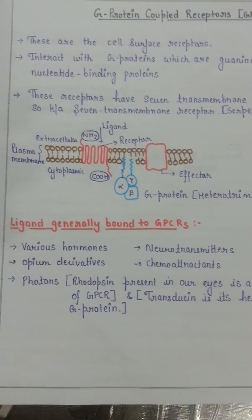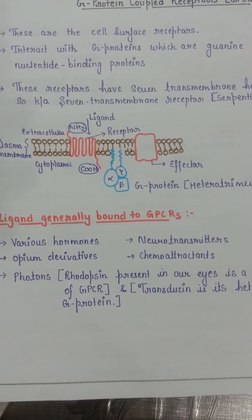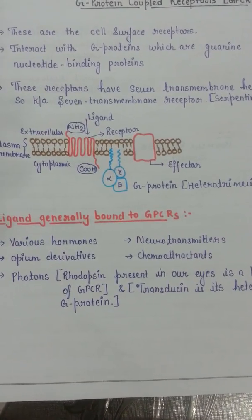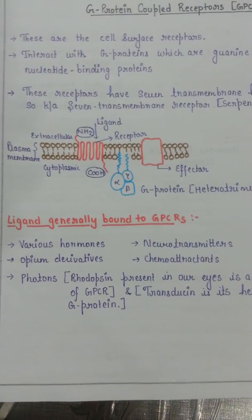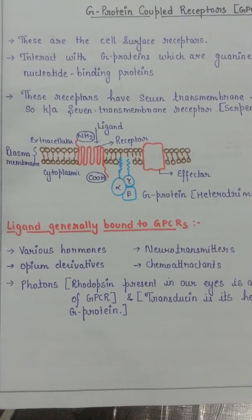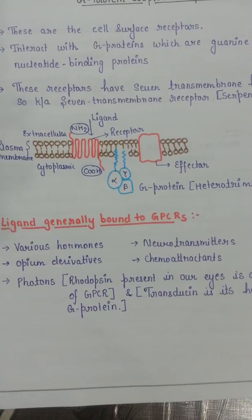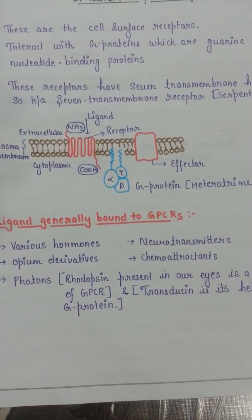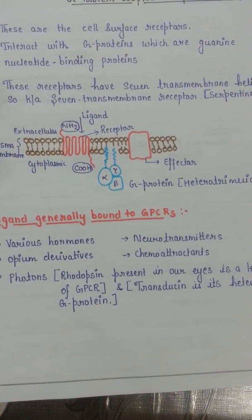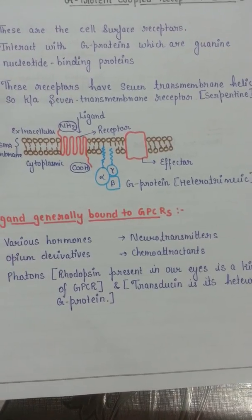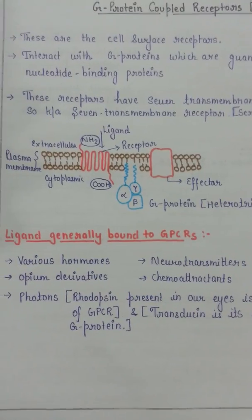Different kinds of GPCRs are present and they attach to different kinds of ligands. For example, we have beta-adrenergic receptors, serotonin receptors, rhodopsin, mast cells, and others. They interact with ligands specific to that particular receptor — the ligand for beta-adrenergic receptors is epinephrine, serotonin binds the serotonin receptor, and photons act as the ligand for rhodopsin.